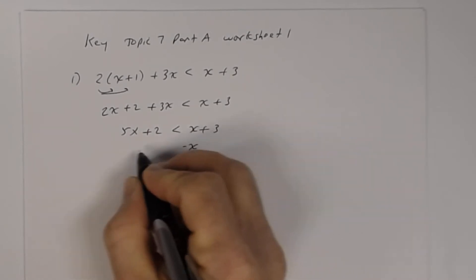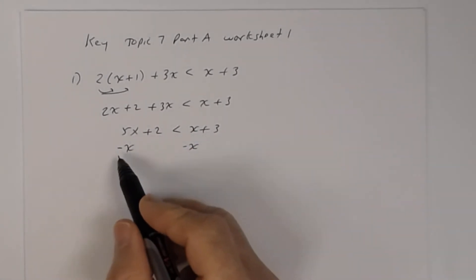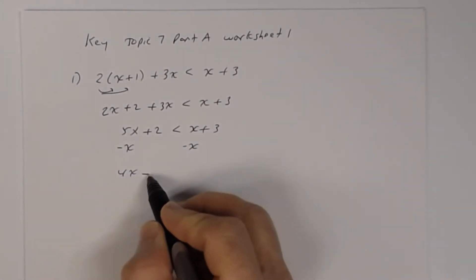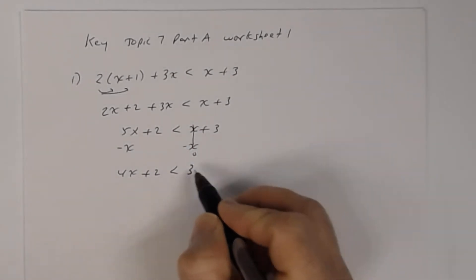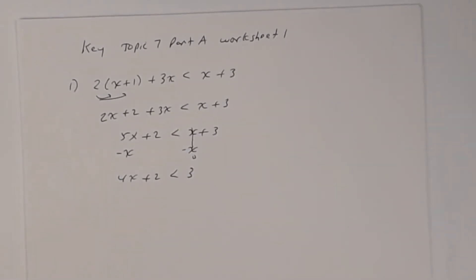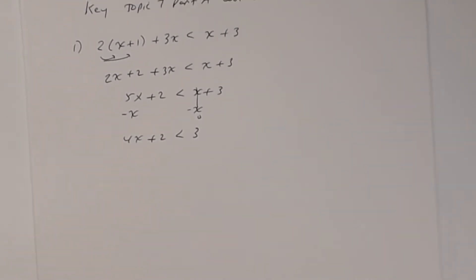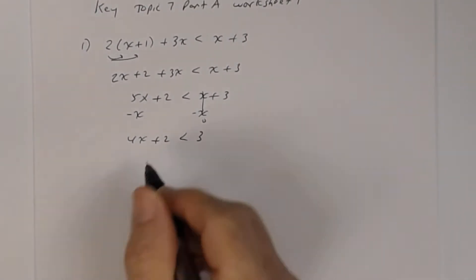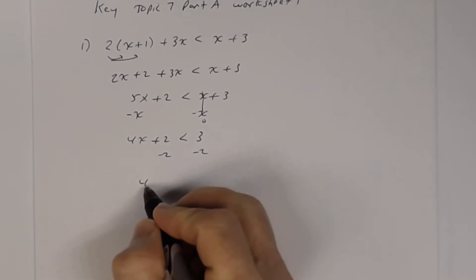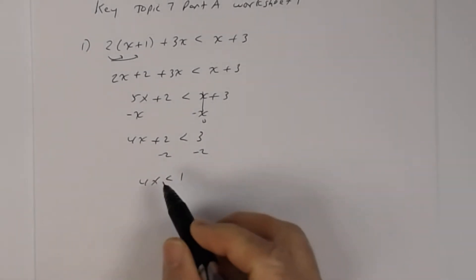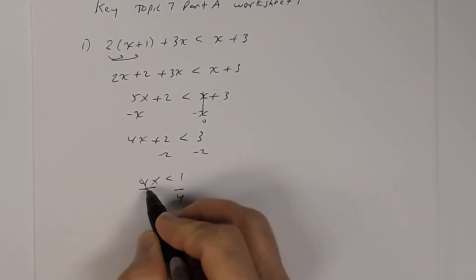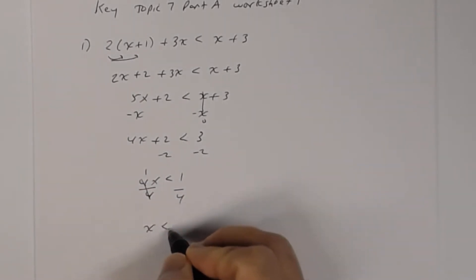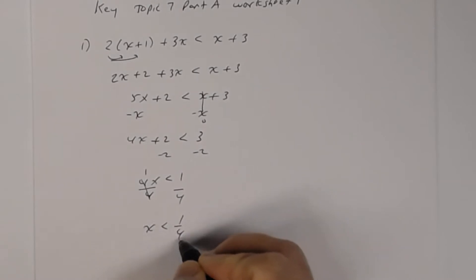Subtracting x from both sides: 5x minus x is 4x, plus 2 is less than 3. Subtracting 2 from both sides gives 4x is less than 1. Dividing both sides by 4: 4 divided by 4 is 1, so we get x is less than 1/4.